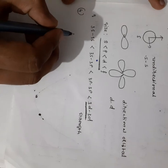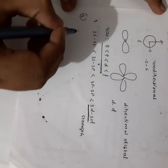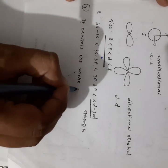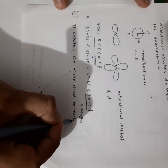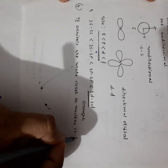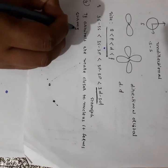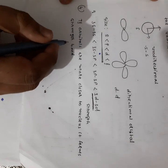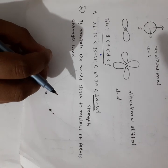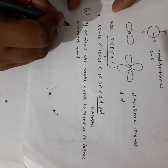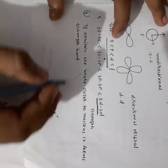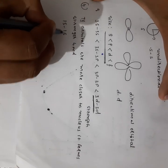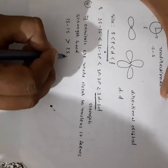The fourth criterion is: if orbitals are closer to the nucleus, they form stronger bonds. As we know, s orbitals are closer to the nucleus than p orbitals, p orbitals are closer than d orbitals, and d orbitals are closer than f orbitals. In the same way, 1s orbitals are closer than 2s, and 2s is closer than 3s. So 1s–1s overlapping is stronger than 2s–2s.